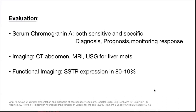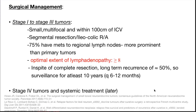For evaluation, serum chromogranin A levels are both sensitive and specific and useful in diagnosis, prognosis, and monitoring of response. For imaging: CT abdomen, MRI, and USG for liver mets, and functional imaging — SSTR expression is present in nearly 100% of patients, so Gallium DOTA PET-CT is used.